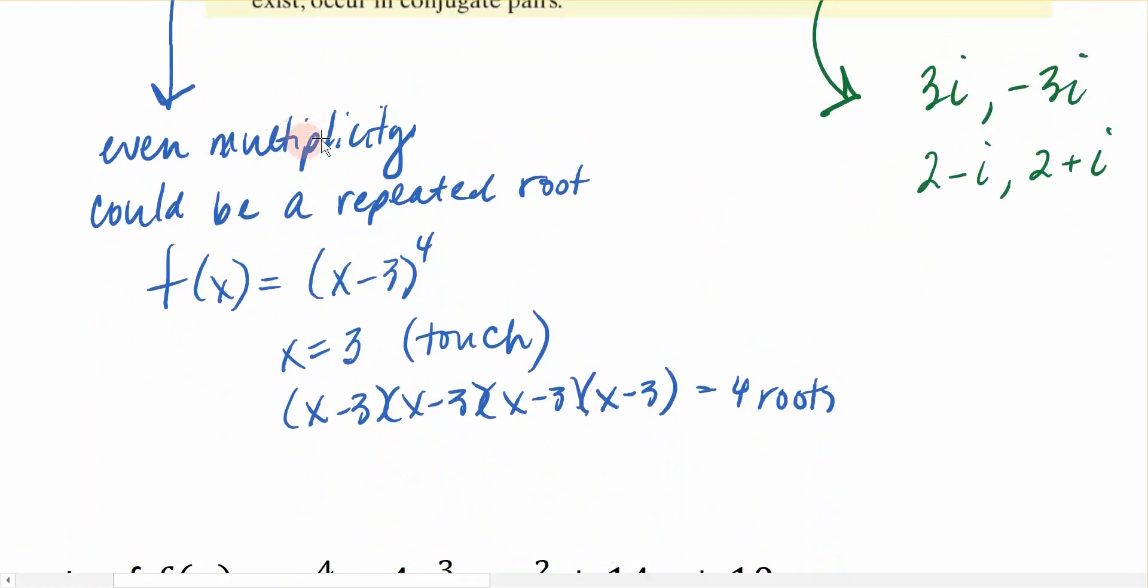Remember that when we talked about multiplicity in that previous section, we could have a function f(x) equals x minus 3 raised to the fourth power, and that 4 was the multiplicity of this root. If this is the root, because it's an even multiplicity I touch at 3. But because exponential notation, writing something to the fourth power, implies that I have x minus 3 times x minus 3 four times, we could say that this fourth degree polynomial has four roots.